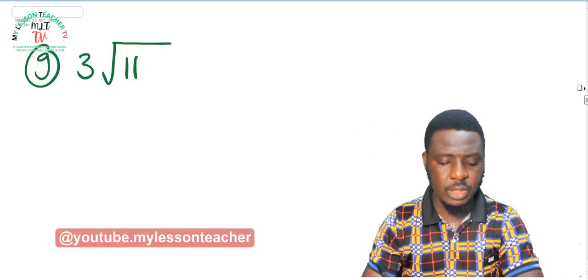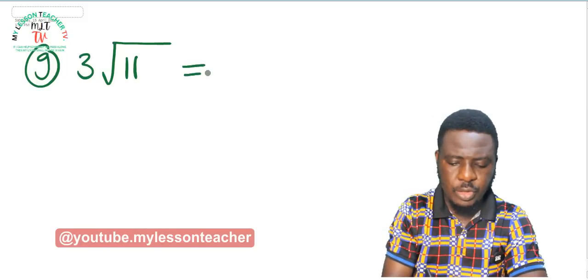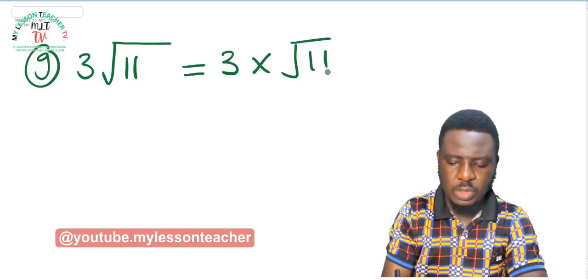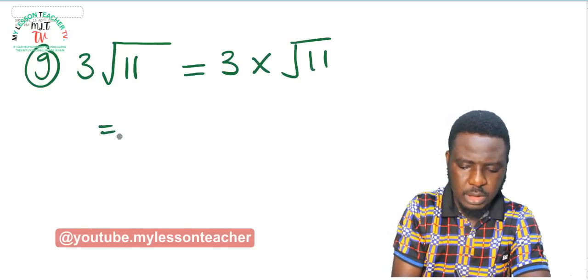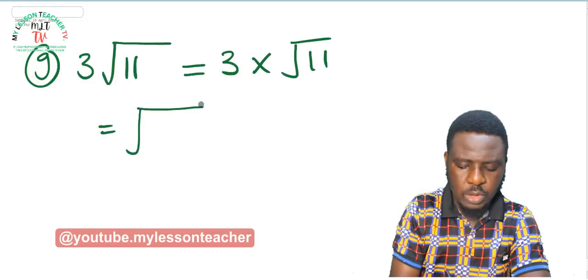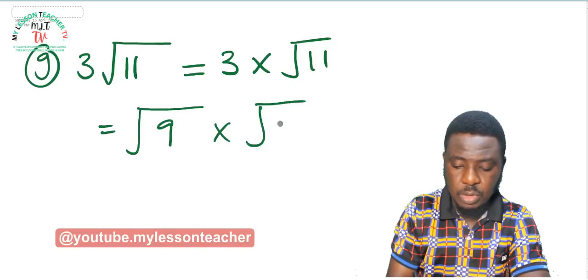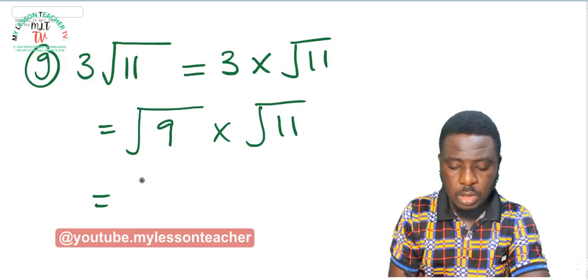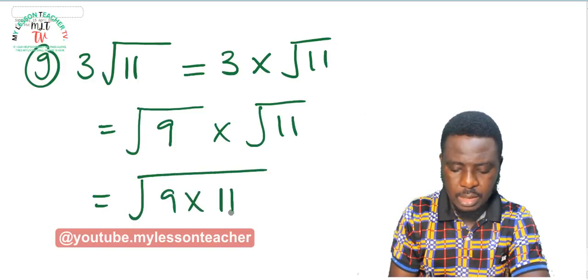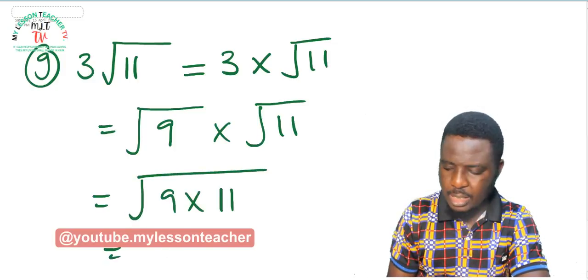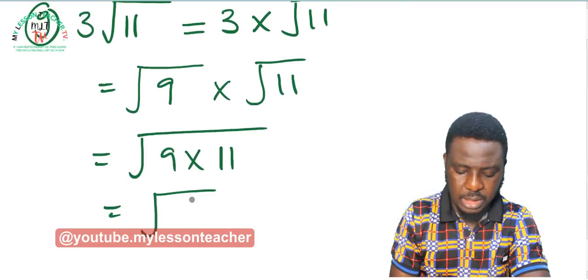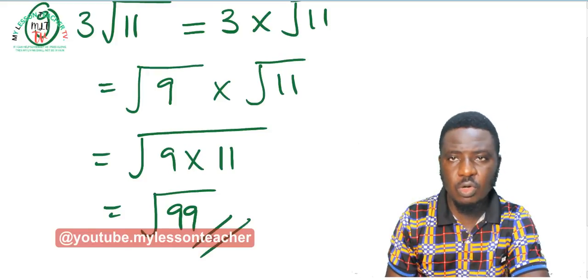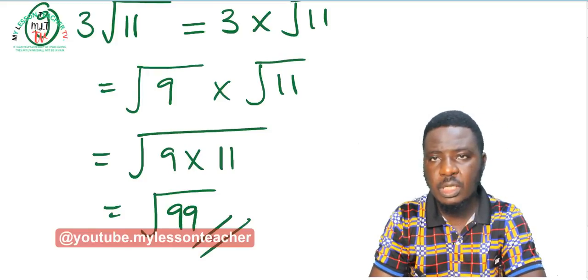Example G: 3 root 11. This can be written as 3 times root 11. Since root 9 equals 3, this becomes root 9 times root 11, which simplifies to root of 9 times 11. 9 times 11 is 99, so this becomes root 99. Root 99 is the single surd form of 3 root 11.